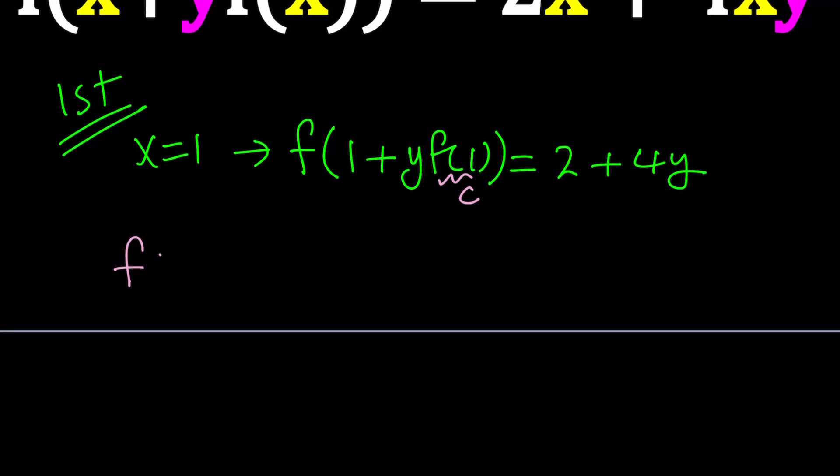So, we get f(cy+1) equals 4y plus 2. Now, we have a linear expression inside the parentheses, linear expression on the right-hand side. Does this mean f is linear? That's a good question, right?